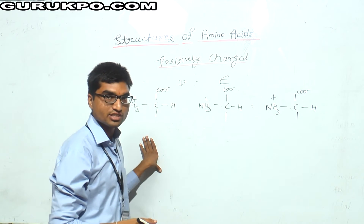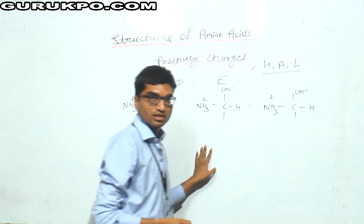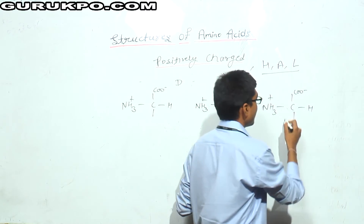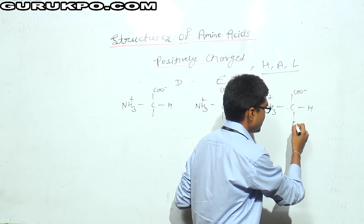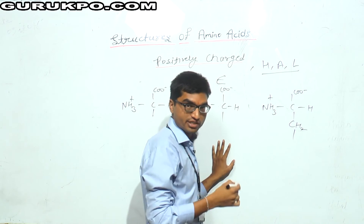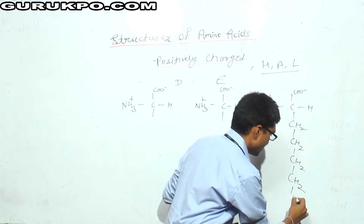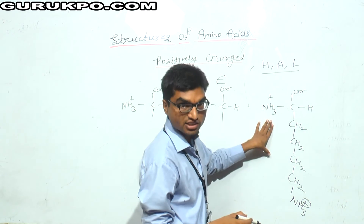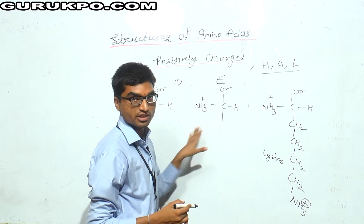The next type is positively charged amino acids. There are three positively charged amino acids: histidine, arginine, and lysine. These polar positively charged amino acids can also be formed from alanine. For lysine, you place four CH2 groups — 1, 2, 3, and 4 — and thereafter an amine group (NH3⁺). This positive NH3⁺ group provides the positive charge to lysine.